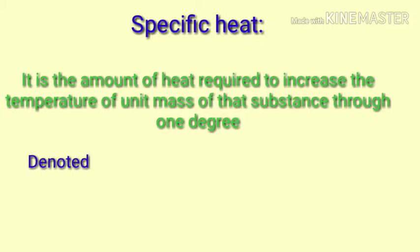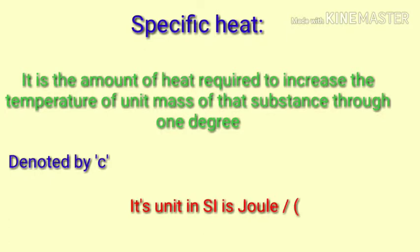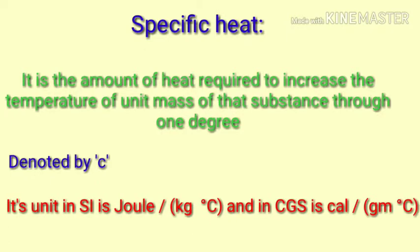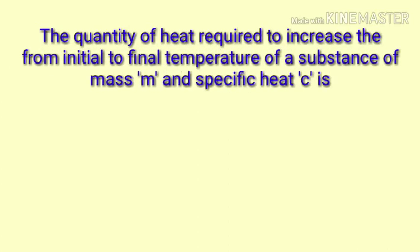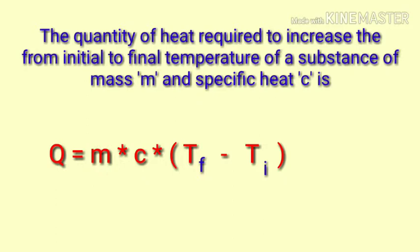It is denoted by small c and its unit in SI is Joule per kg degree Celsius and in CGS, it is calorie per gram degree Celsius. The quantity of heat required to increase from initial to final temperature of a substance of mass M and specific heat C is Q, which is equal to M into C into Tf minus Ti, where Tf is the final temperature and Ti is the initial temperature.